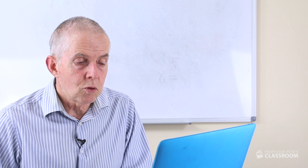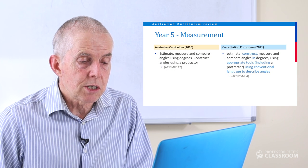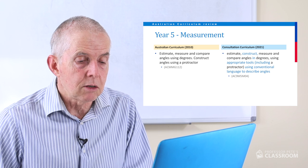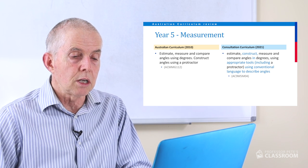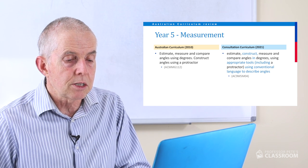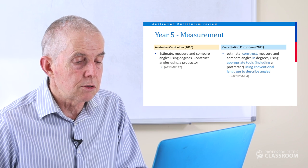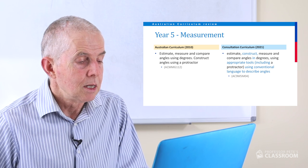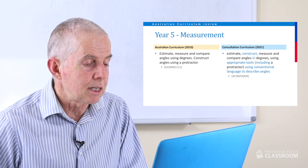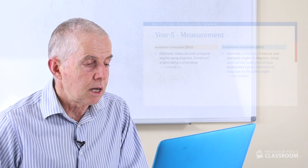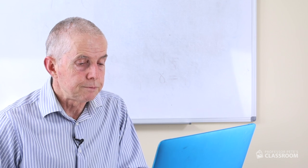Measurement number four: estimate, construct, measure and compare angles in degrees using appropriate tools, including a protractor, using conventional language to describe angles. Again, almost the same as before — it's been clarified and extended a little bit, and it's a good change. Well done.